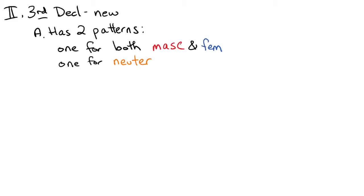The third declension is a new declension for us, and it has two patterns. One for both the masculine and the feminine in one pattern, and a separate pattern for neuter nouns.